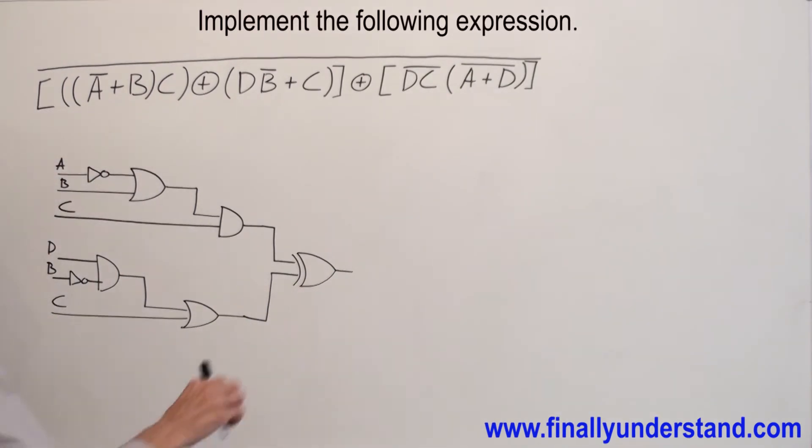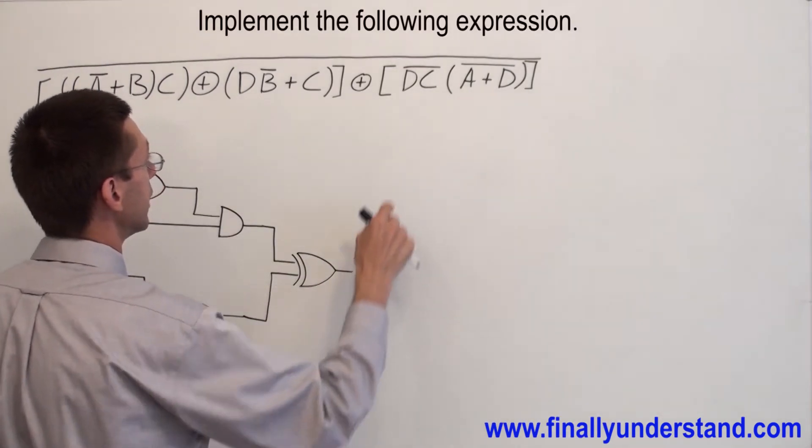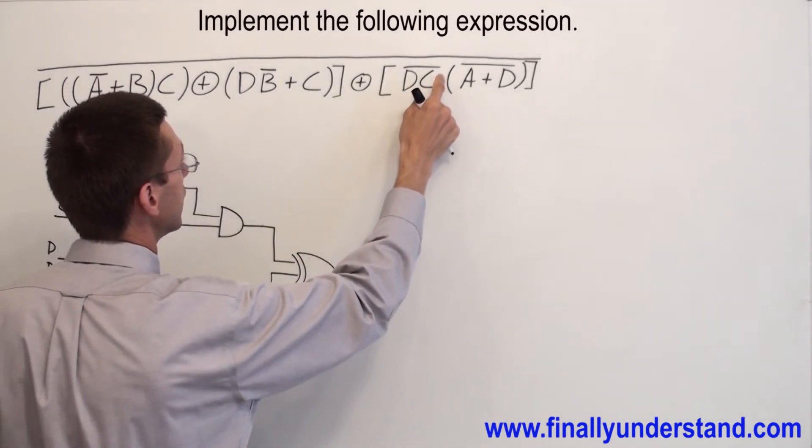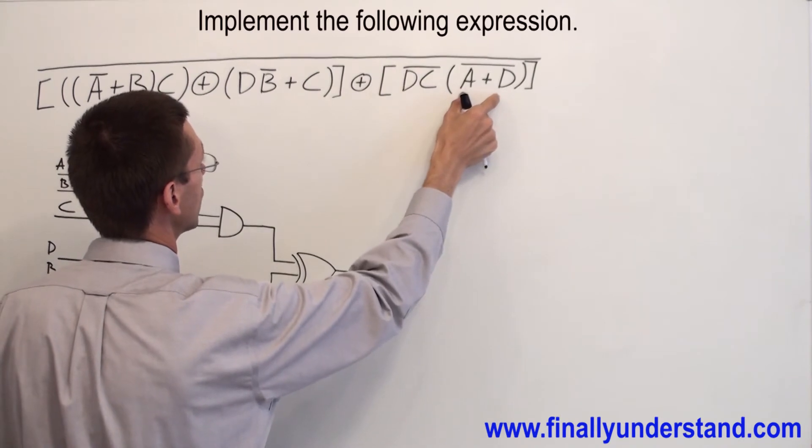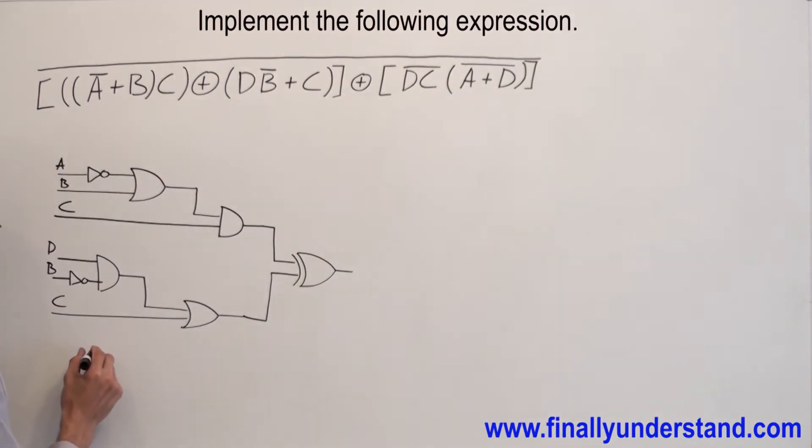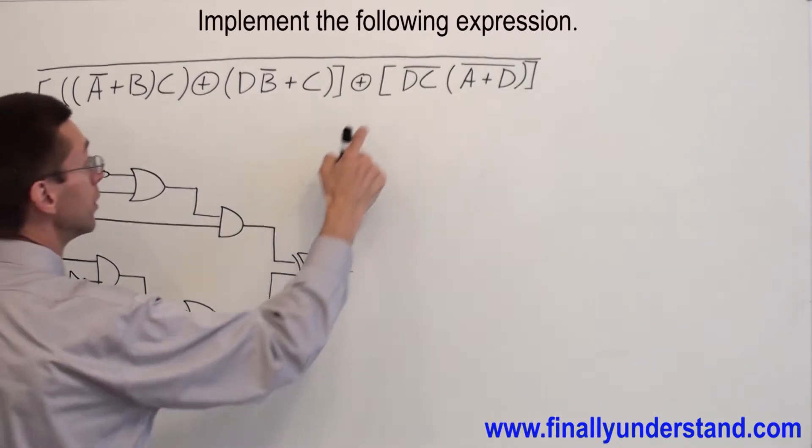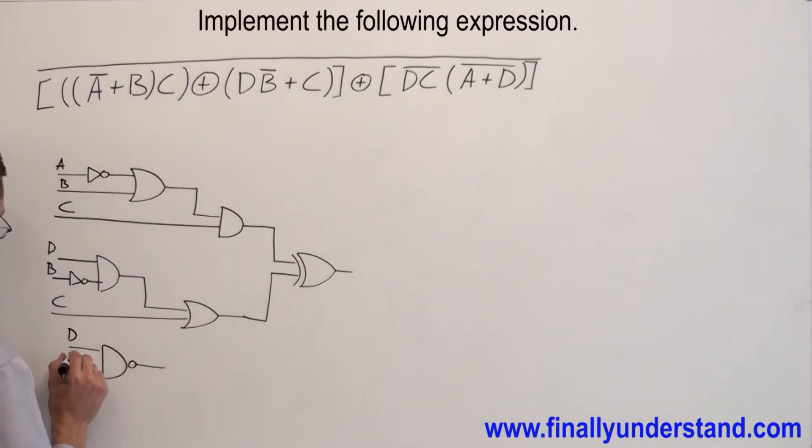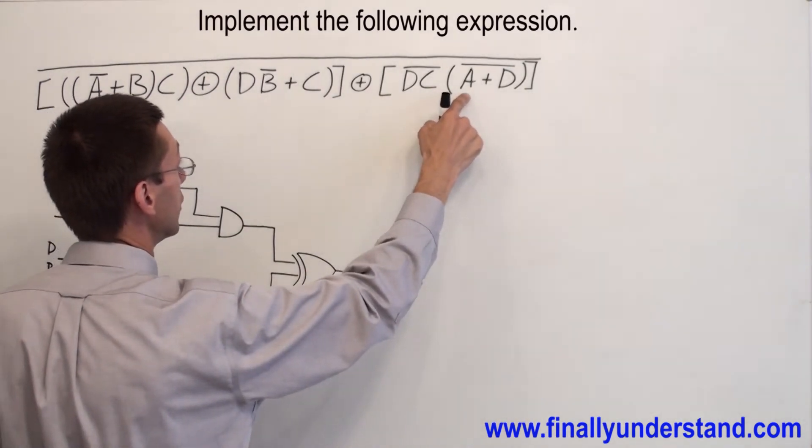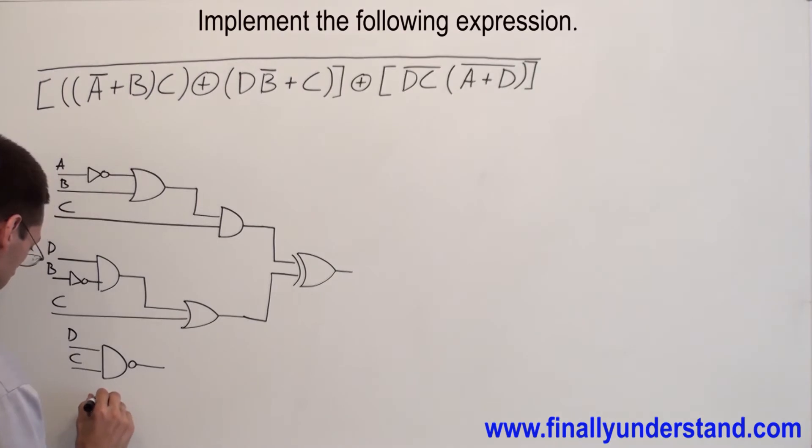Now, the second part is NAND gate ANDed with NOR gate. I have NAND gate, I have NAND gate with inputs DC, DC, and with NOR gate. And my NOR gate has two inputs.